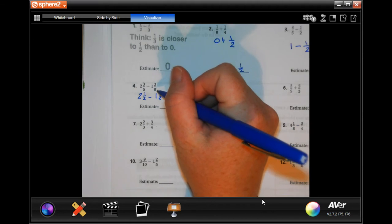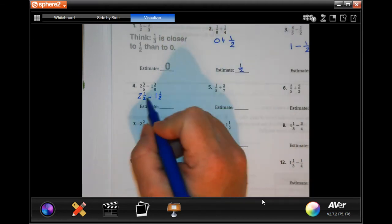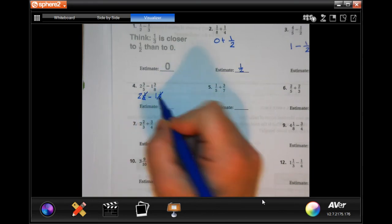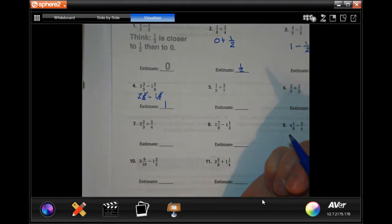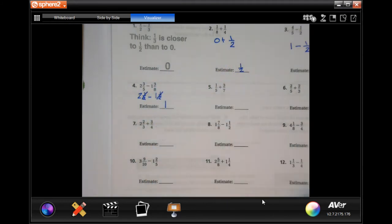3 is about half of 8 because 4 would be half of 8. Then I'm just going to take away the halves, and then 2 minus 1 is 1. 1/2 minus 1/2 is nothing, so I just crossed them off. 2 minus 1 estimate is 1.